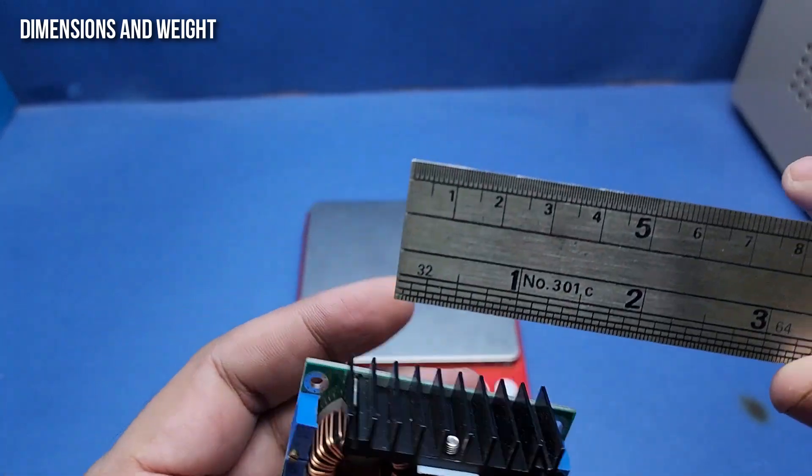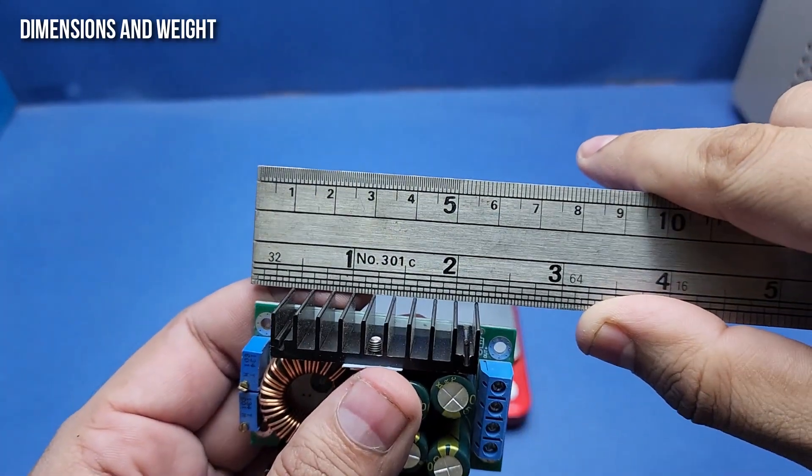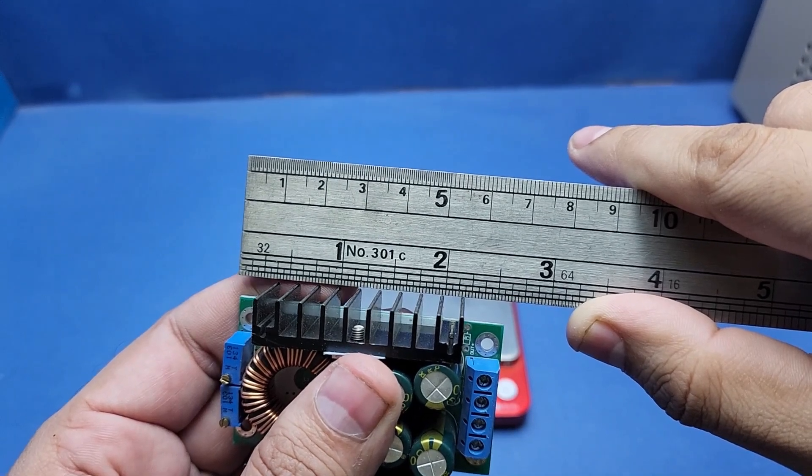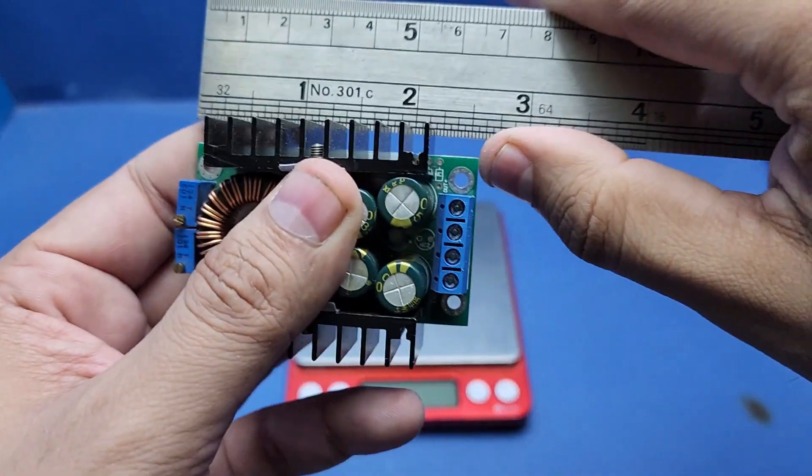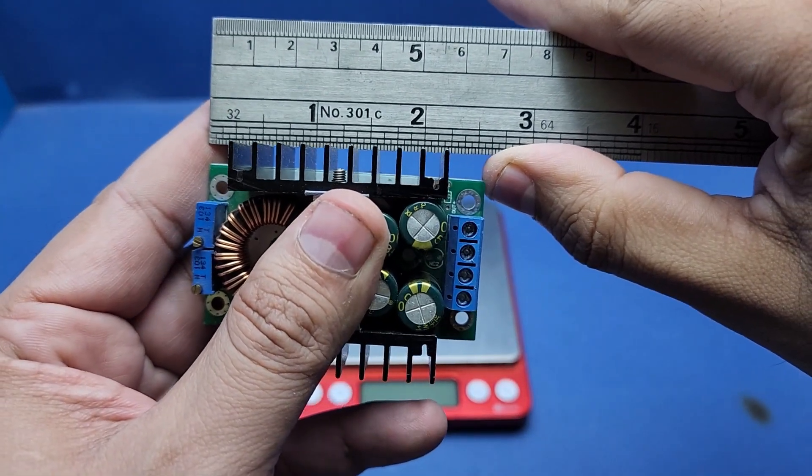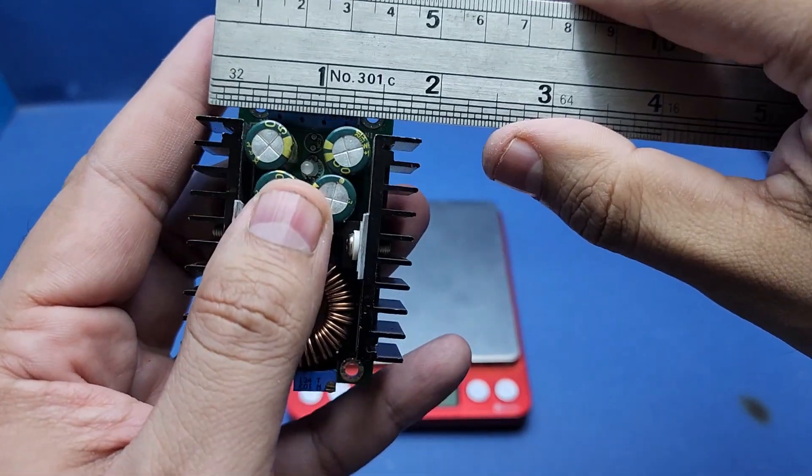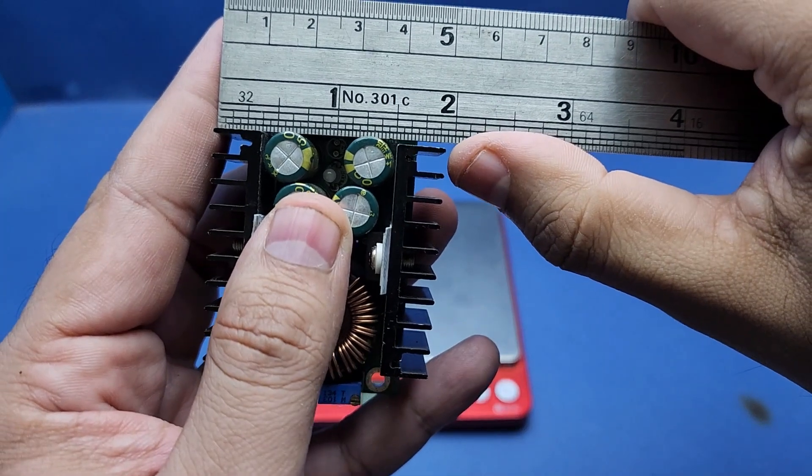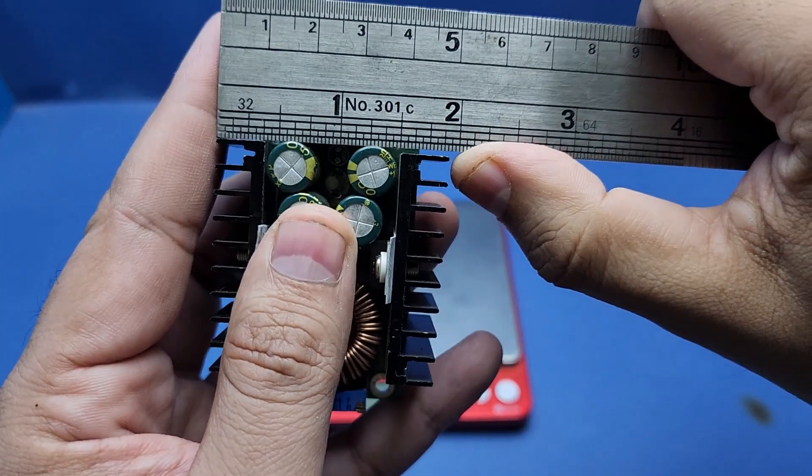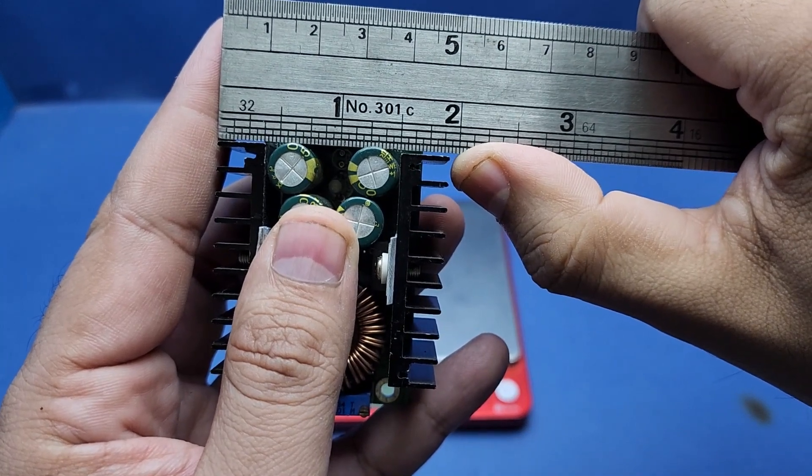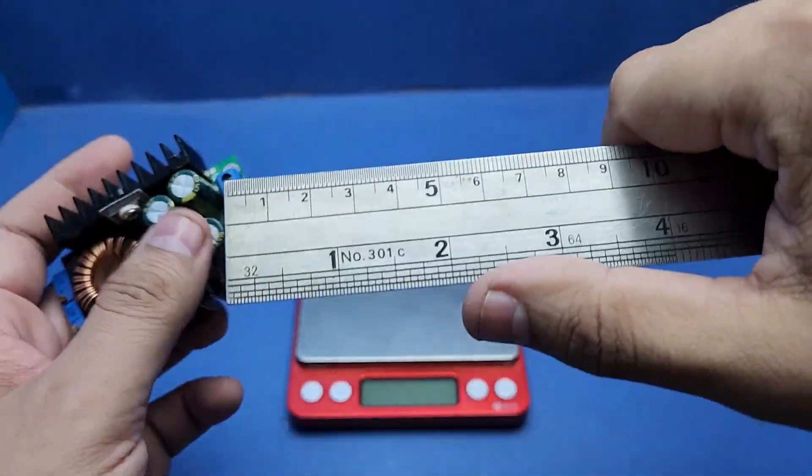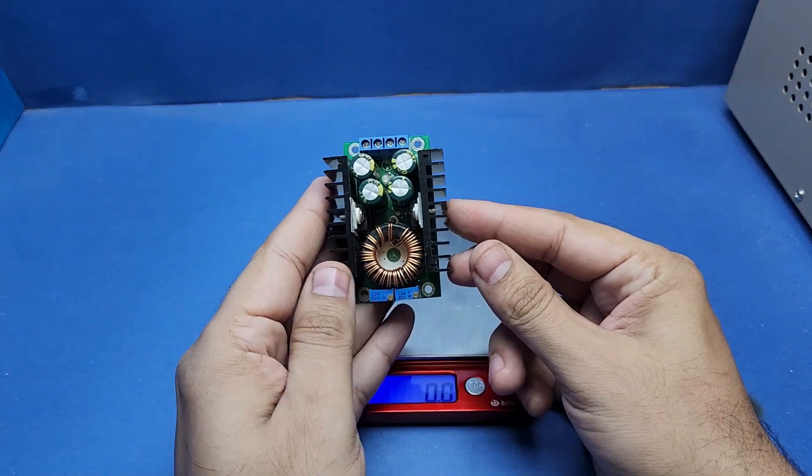Now it is time to show you the exact dimensions of this module in case you want to 3D print a casing for it. This module is 2.55 inches or 6.5 centimeters long and 1.9 inches or 4.8 centimeters wide. The height of this module is a little below 1 inch or 2.4 centimeters to be exact.